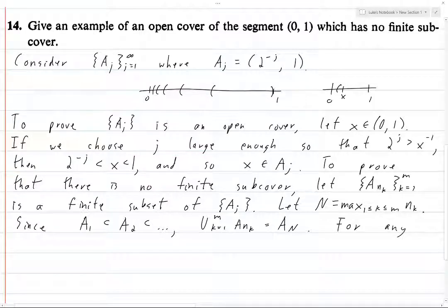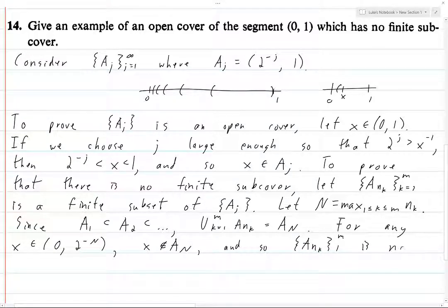But now, clearly the point is that the union of these a n k's is a n, which is not the entire interval from 0 to 1, and so it's not an open cover. And I'll prove that in slightly more detail. So for any x in the open interval from 0 to 2 to the minus n, then x is not in a n, because the left endpoint of a n is 2 to the minus n.